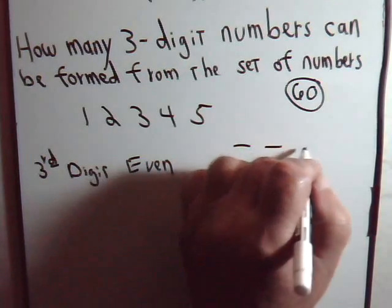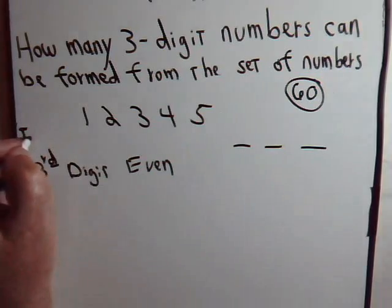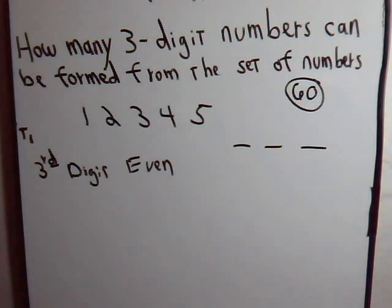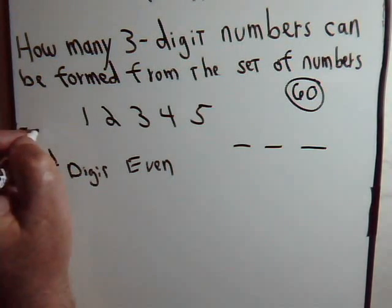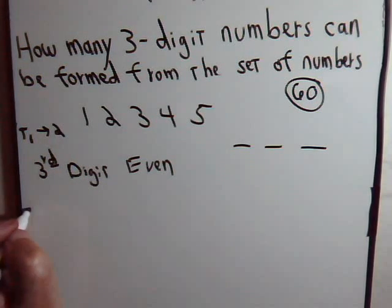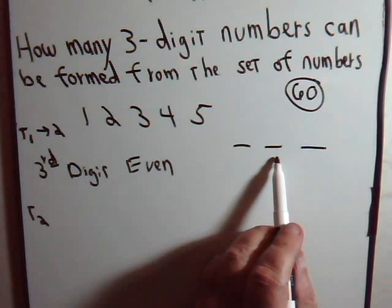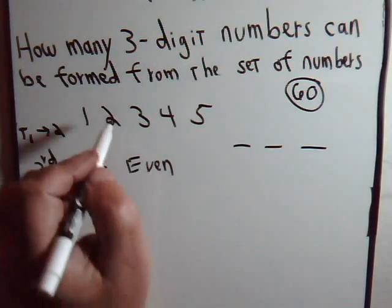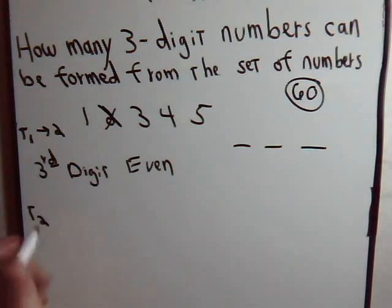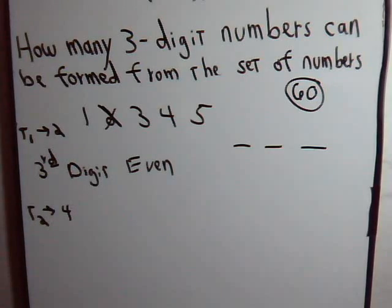Now we're thinking about how we're going to make the number. Task T1 is selected for the third digit, and to do that, there's two choices. So task T1, there's two ways of performing it. Now task T2, that is to select a number for this slot. Well, one of these even numbers is gone. So to perform task T2, now we have four numbers to choose from. There are four ways of performing task T2.